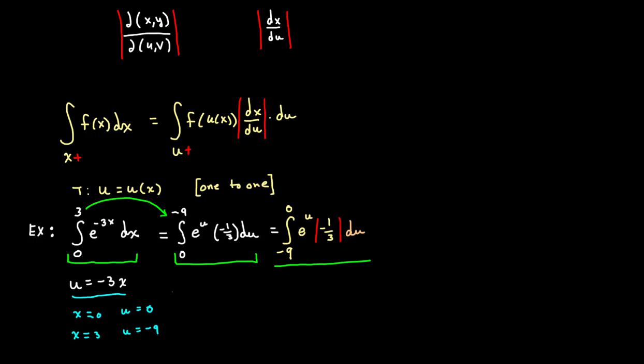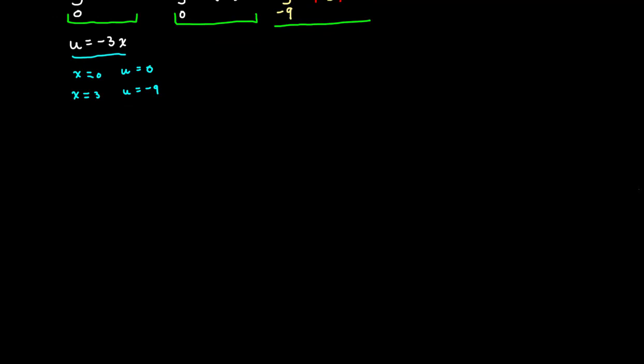However, this is not the case with double integrals. The bounds don't translate like they do here, so we force the absolute value, and then we force a positively oriented bound structure, which is what I would like to illustrate using some of the earlier examples.